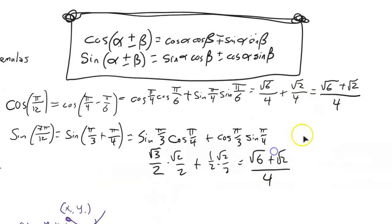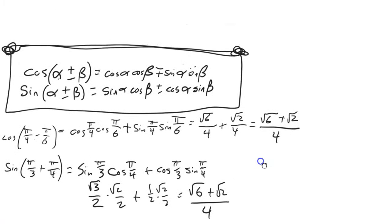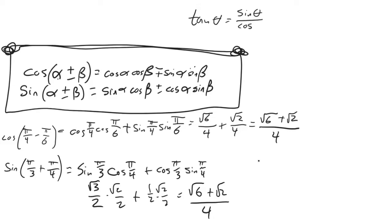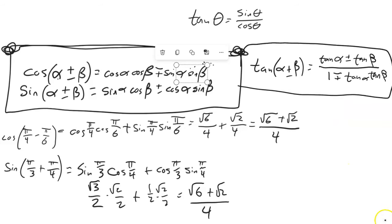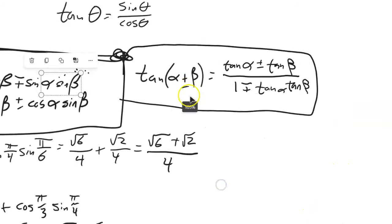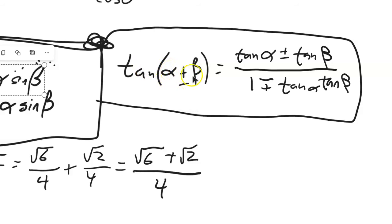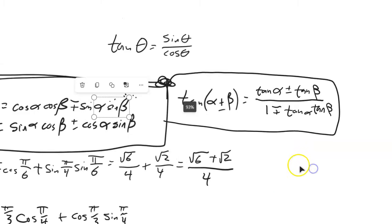There are also sum and difference formulas for tangent. One way is: if you've already done the work for sine and cosine of the combined angle, you can just divide sine by cosine. If you haven't, use the tangent formula: tangent of alpha plus or minus beta equals tangent of the first angle, same operator, tangent of the second, divided by one, opposite operator, tangent of the first times tangent of the second.